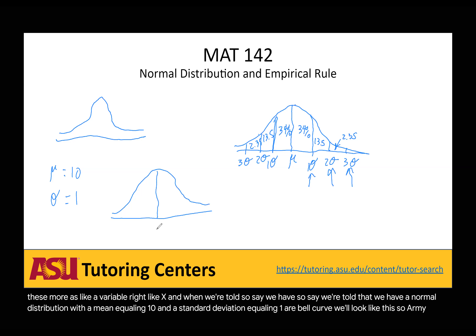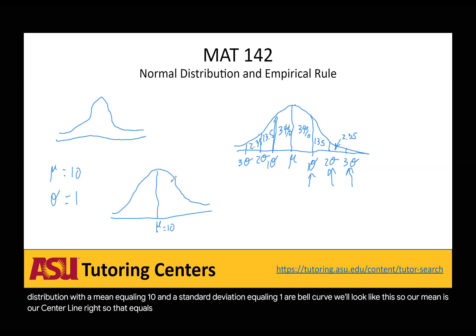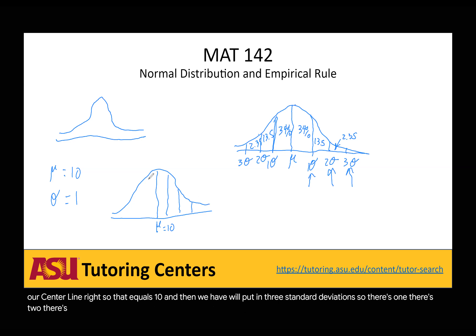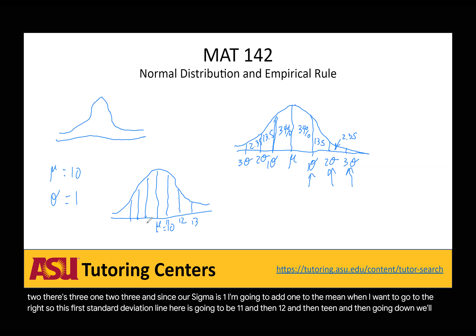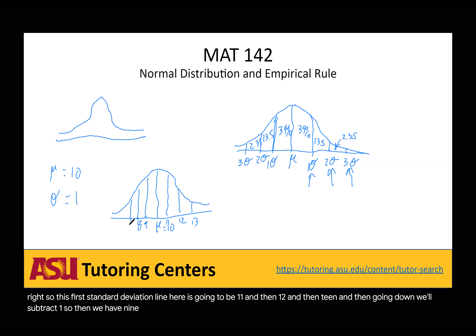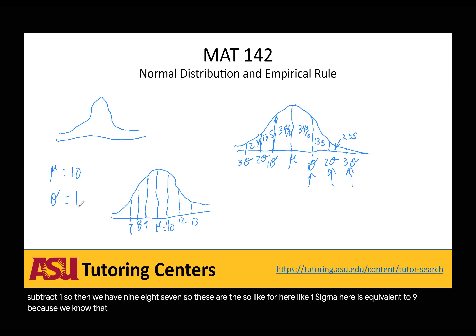Our bell curve will look like this. Our mean is our center line, so that equals 10. Then we'll put in three standard deviations on each side: 1, 2, 3. Since our sigma is 1, I'm going to add 1 to the mean going to the right — so the first standard deviation line is 11, then 12, then 13. Going down to the left, we subtract 1: so we have 9, 8, 7. So 1 sigma to the left is equivalent to the value 9, because our standard deviation is 1.